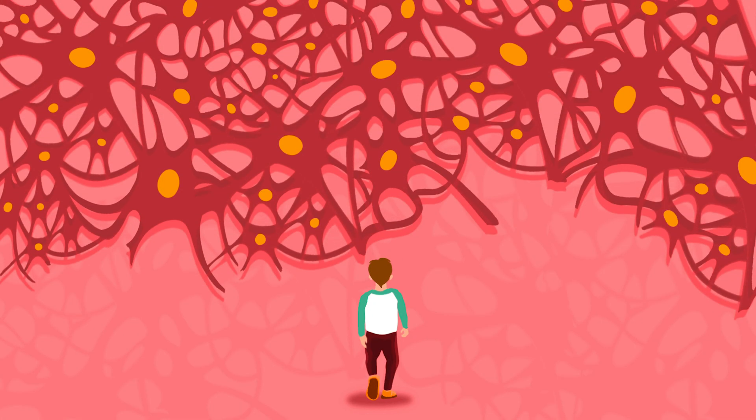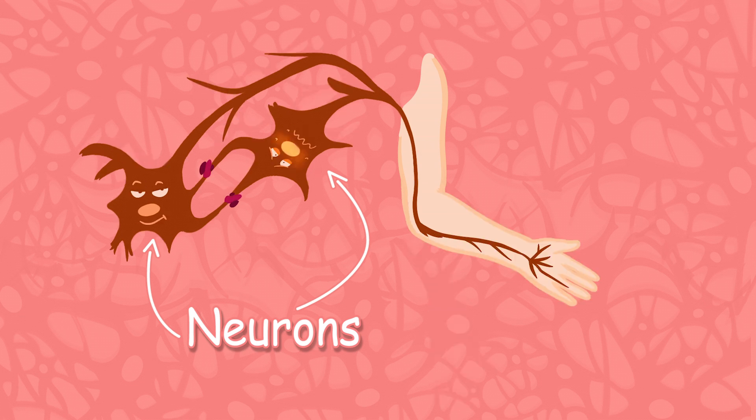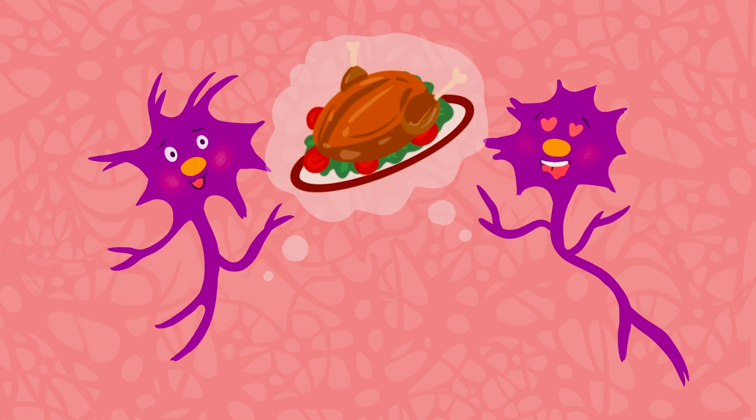Imagine you went for a walk inside your brain. You look to your right to see some nerve cells or neurons busy doing their work moving your arm. You look to your left and you see some other neurons thinking about what you'll be having for dinner later tonight.